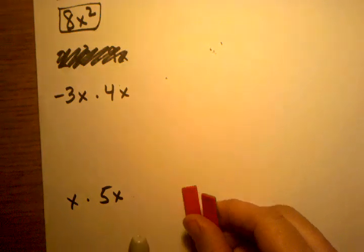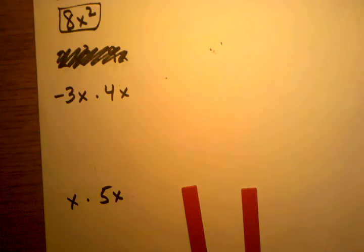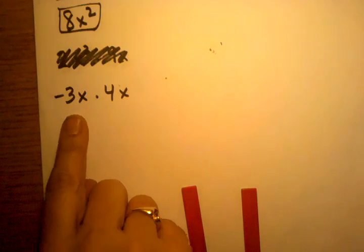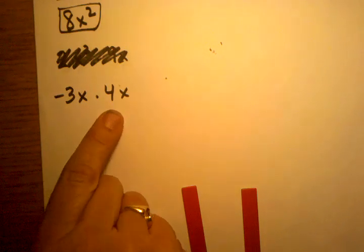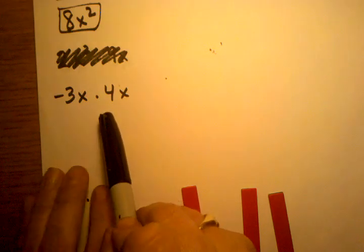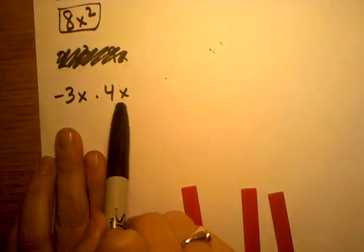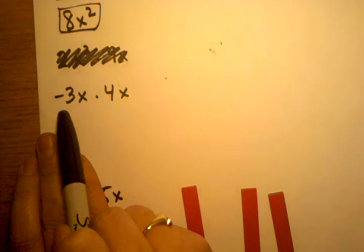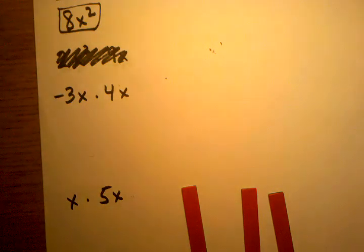Okay, so continuing on with the last video, now let's do this problem: negative 3x times 4x with the algebra tiles. So the only difference between this and the last problem we just did is that we're still multiplying, but now we're going to multiply with a negative number. Let's see what that means, telling us the negative number of x's.